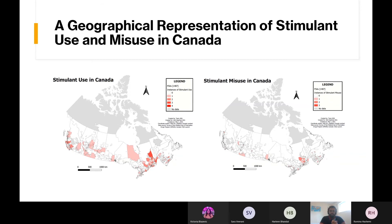To observe the geographical distribution of stimulant use and misuse, we generated one map for each topic. We first sorted the data according to the Forward Sortation Area, or FSA, which is the first half of the postal code. This allowed us to obtain the total number of instances of use and misuse for various drugs. We used QGIS together with data from Statistics Canada to create a map of all FSAs in Canada, and generated a choropleth map of stimulant use and misuse across the country.